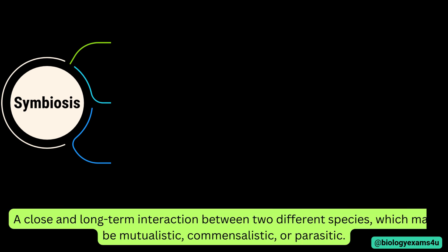Symbiosis refers to a close long-term interaction between two species which may be mutualistic, commensalistic or parasitic. There are three types of symbiosis.